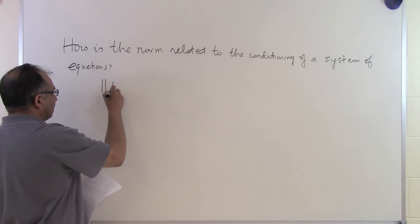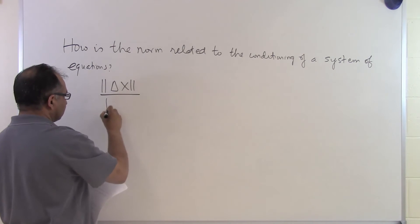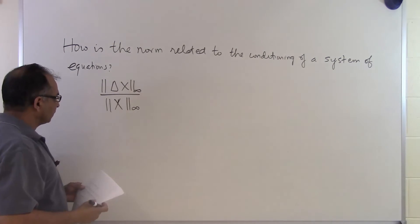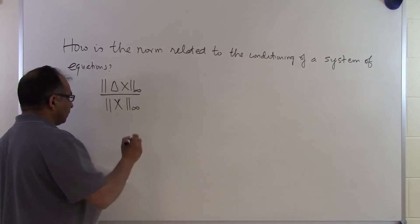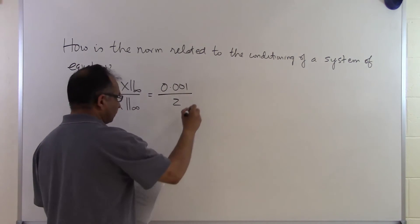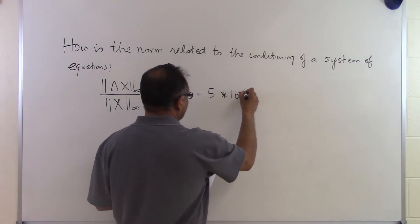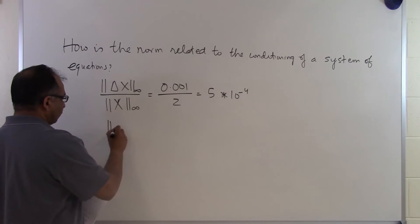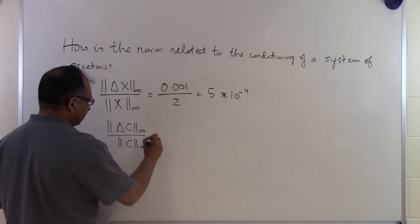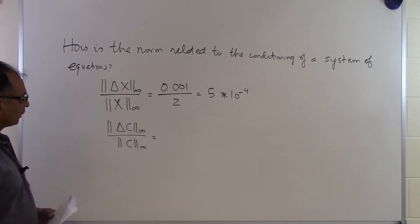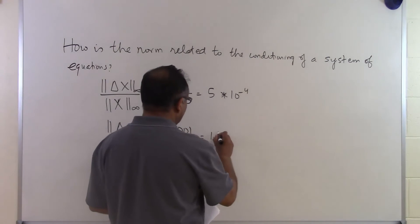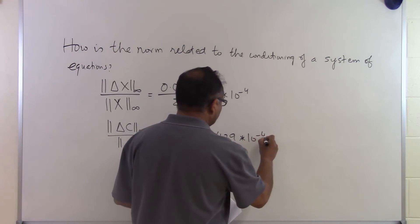Now let's look at the relative changes. The relative change in the solution vector — norm of delta X divided by norm of X — turns out to be 5 times 10 to the power minus 4. The relative change in the right-hand side vector — norm of delta C divided by norm of C — is 0.001 divided by 7, which equals 1.429 times 10 to the power minus 4.